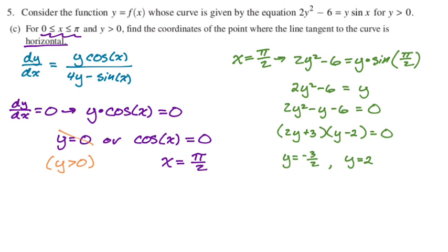So either y is negative 3 halves or y is 2. But again, y is greater than 0. That's doing a lot of work. So y is greater than 0. Therefore, our y coordinate is definitely 2. And our ordered pair is definitely pi over 2, comma 2. That's the only point that satisfies this. They told you. It says find the coordinates of the point where the line tangent is horizontal. So you knew there was only one. If you forgot that, you had to go back and find the reason for it. And it's because y is greater than 0.